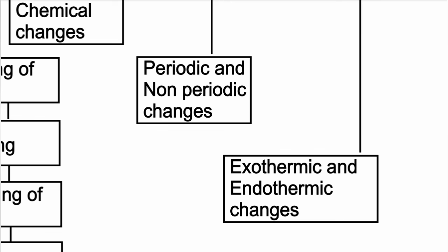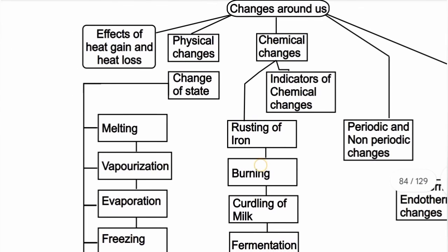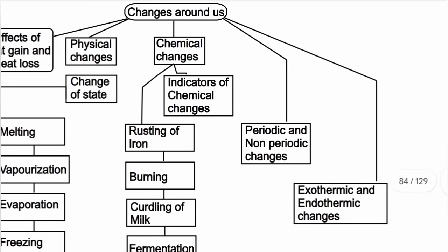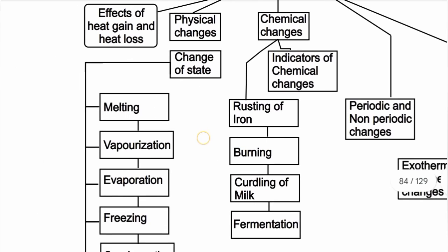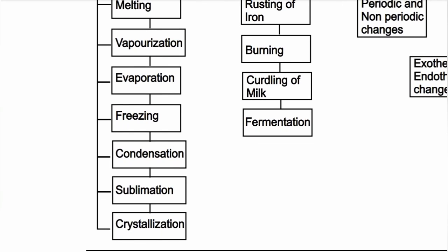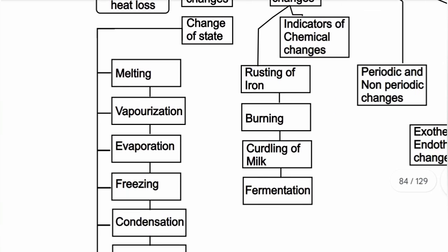Overall, changes around us include: effects of heat gain and heat loss — physical changes, chemical changes, periodic and non-periodic changes, and exothermic and endothermic changes. Change of state covers melting, vaporization, evaporation, freezing, condensation, sublimation, and crystallization. Indicators of chemical changes include rusting of iron, burning, curdling of milk, and fermentation.